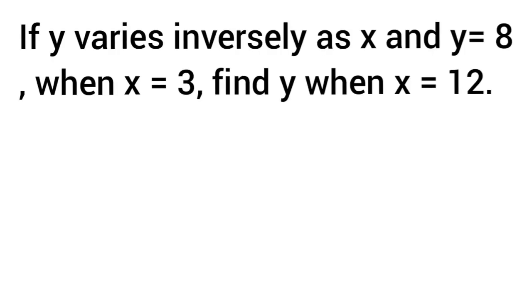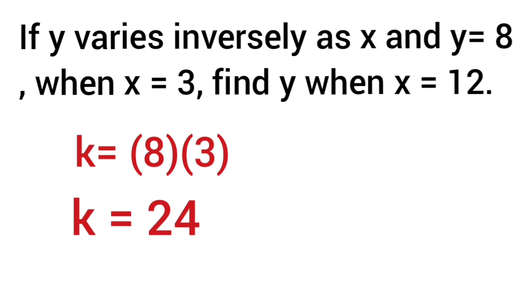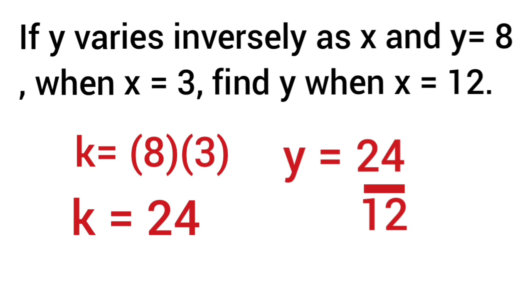Next, if y varies inversely as x and y equals 8 when x equals 3, find y when x equals 12. First, we solve for k: since k is unknown, we multiply y and x, so 8 times 3 equals 24, meaning k equals 24. Then, to find y when x equals 12, we divide k by x: 24 divided by 12 equals 2, so y equals 2.